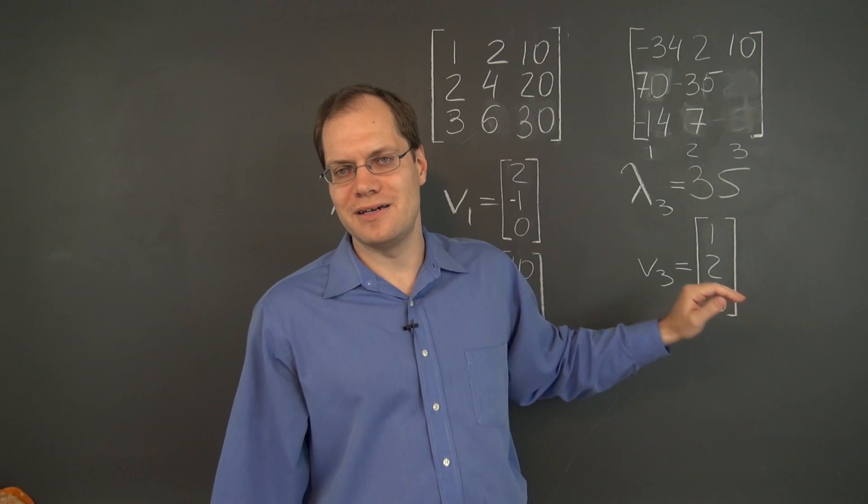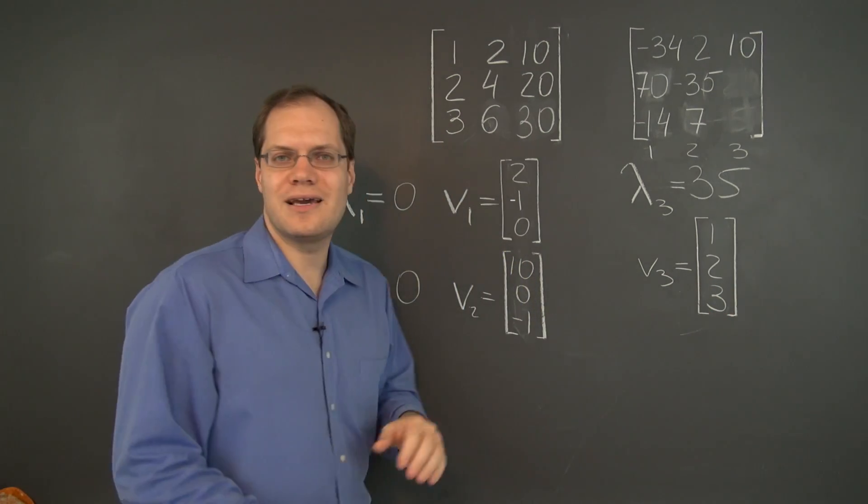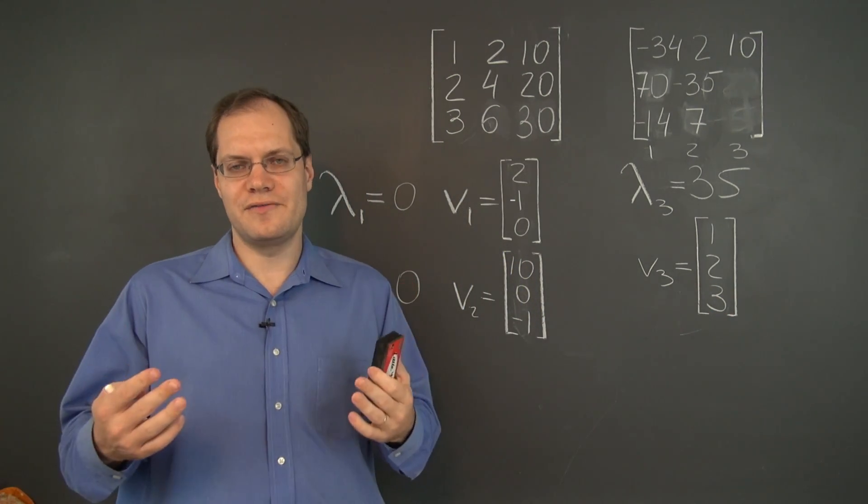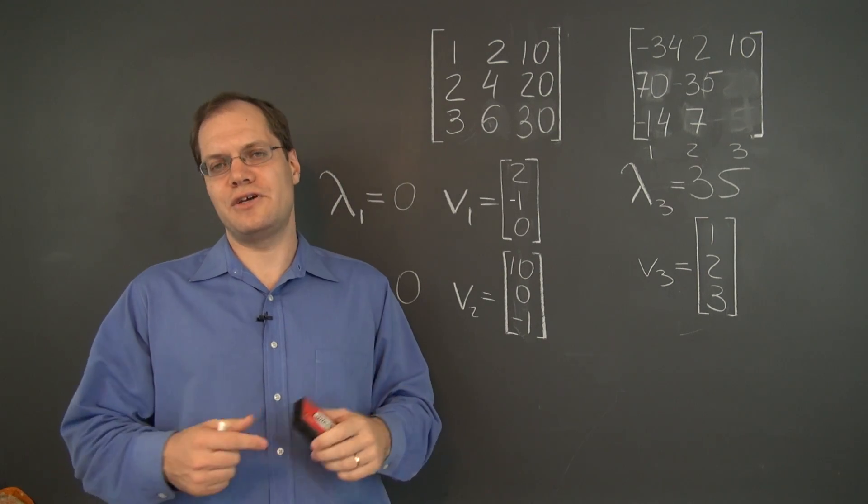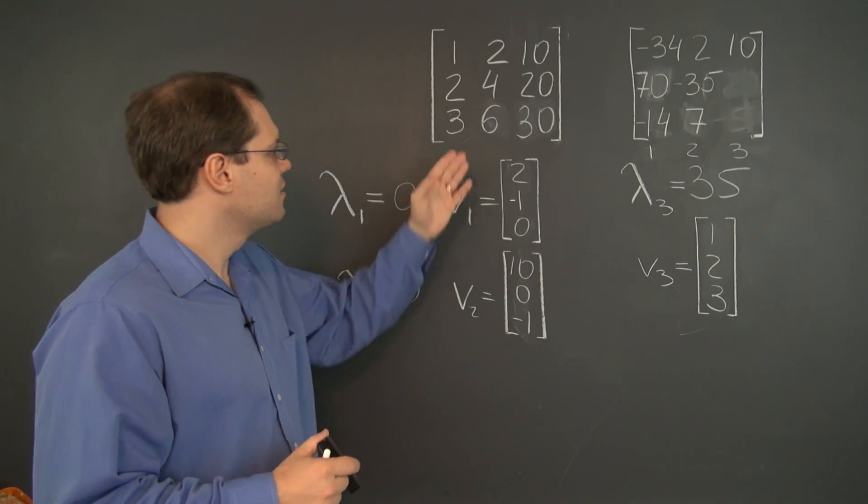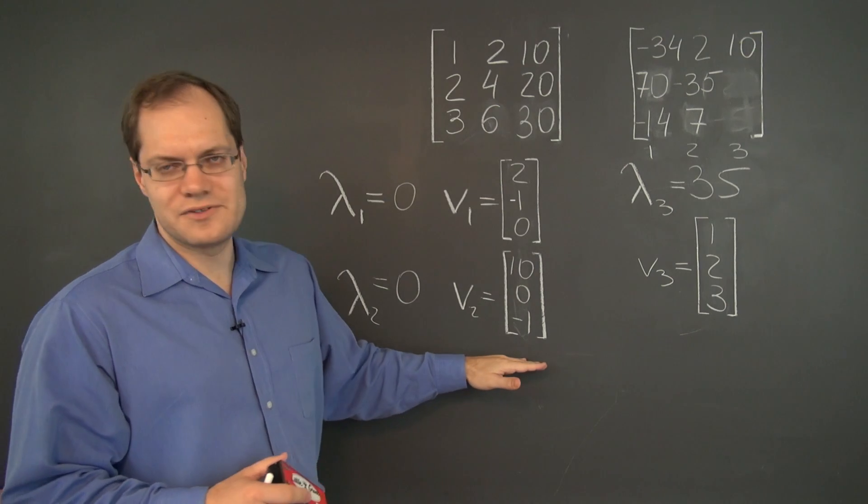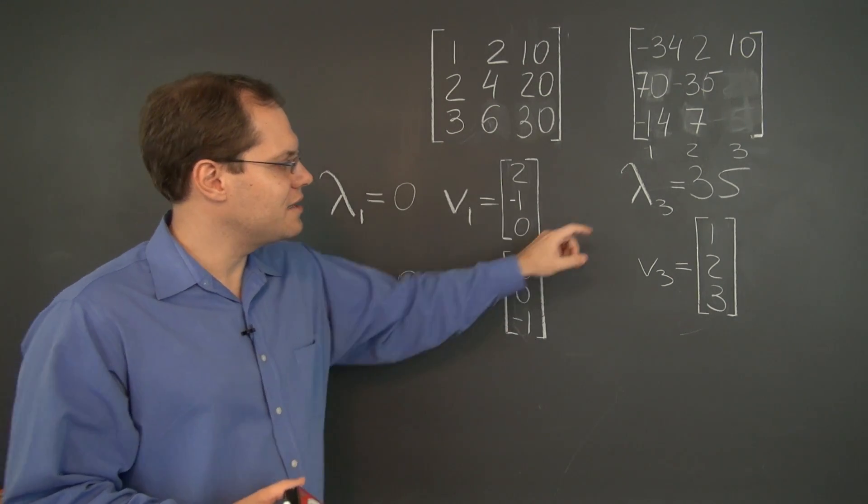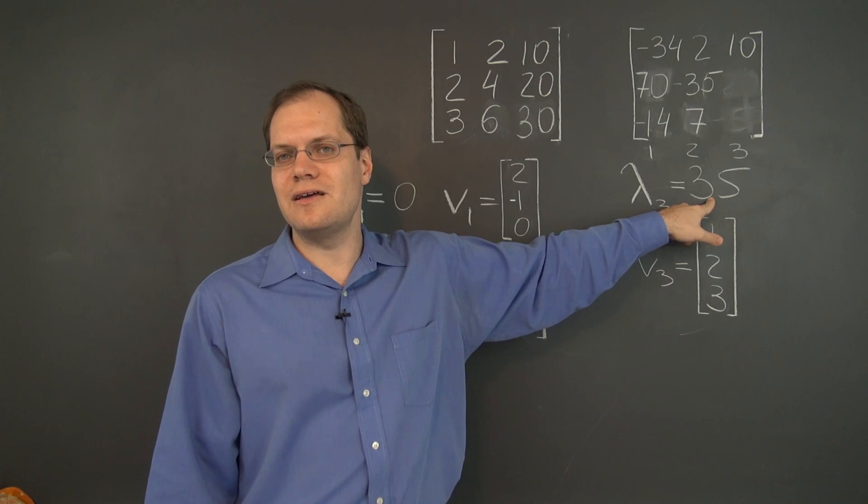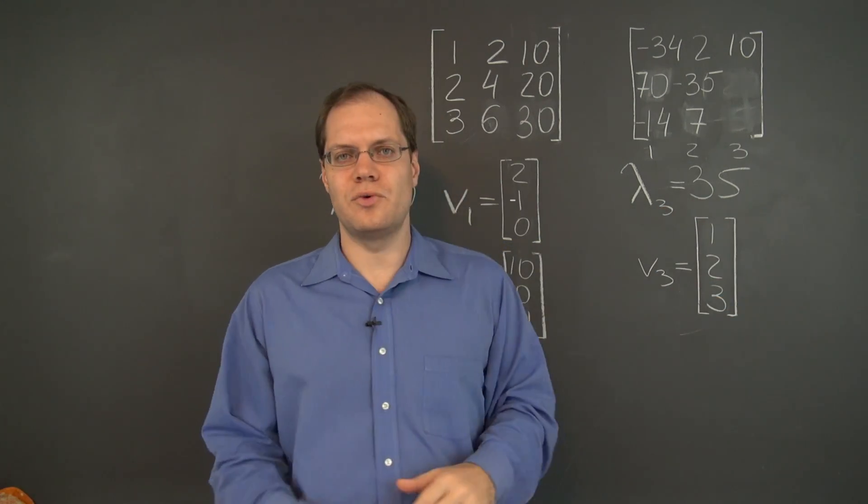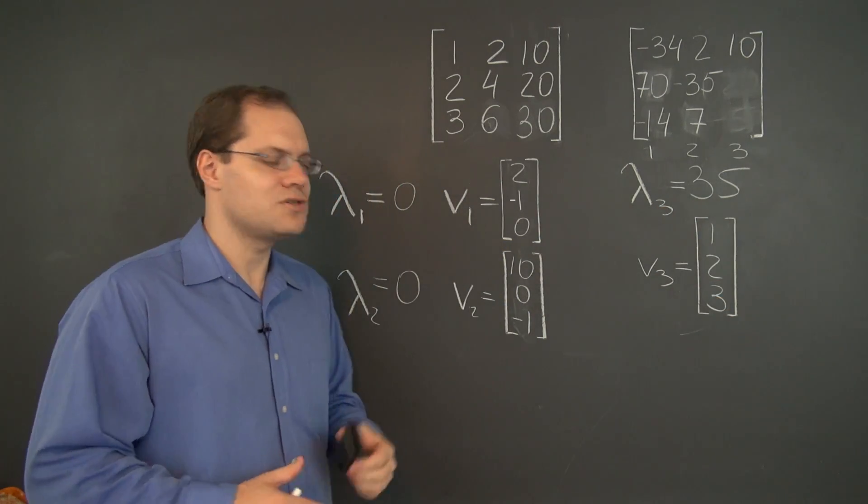So 1, 2, 3 is the corresponding eigenvector. So once again, we were able to determine all of the eigenvalues and all of the corresponding eigenvectors. The nullity gives away both the eigenvalues and the eigenvectors. And the trace always gives us the eigenvalue and we still need to work for the eigenvector. So that's it.